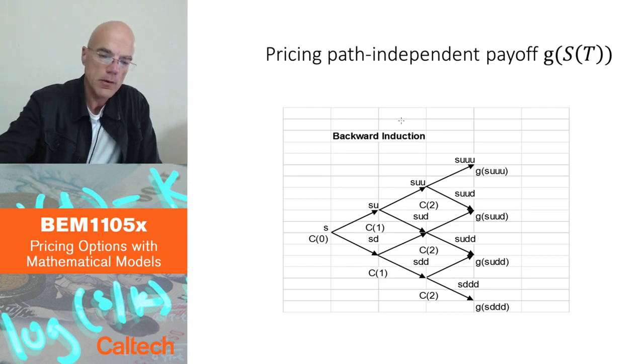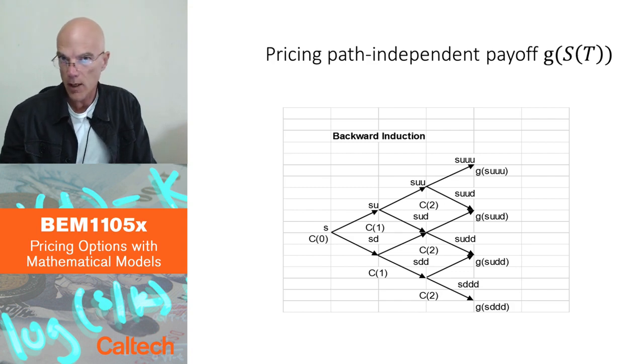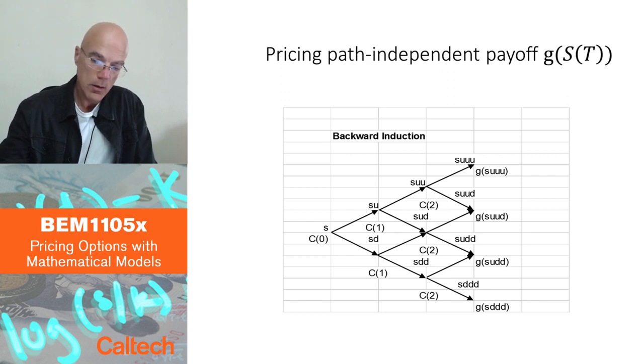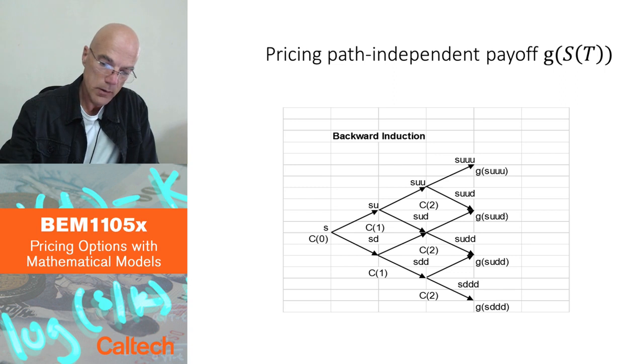This is graphically presenting what I just told you. This works for so-called path independent payoffs. So g is any function. It can be call option function or put option function. But it can be any function of the final value of the stock price. So that's called the path independent payoff. It only depends on what the value of the stock is at the end. It doesn't depend what the path of the stock was before that. So we know, we will know what these values are at the very end. It's just g function at s times u cubed, g function times s, u squared times d, and so on. And depending how much the stock moved, you just evaluate the option payoff at maturity.